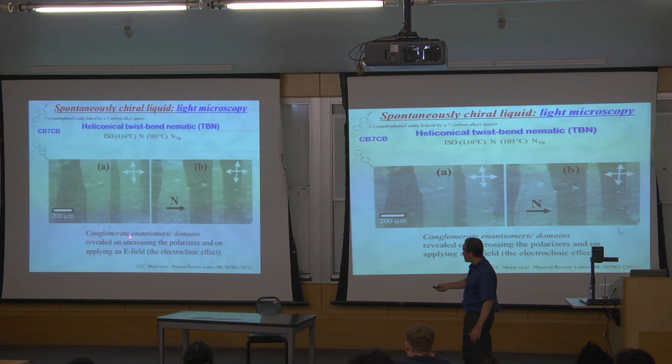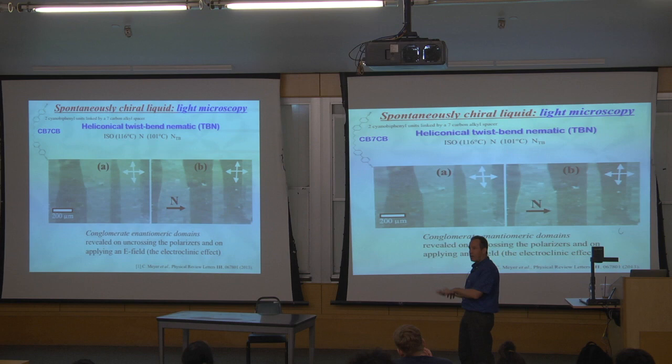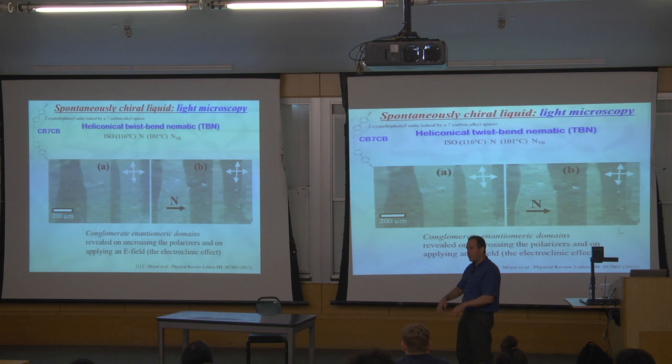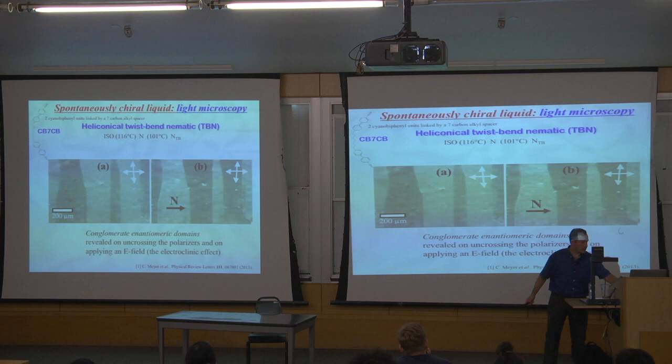The next hint is that when you put on an electric field perpendicular to the cell, the light domains switch to dark and the dark switch to light, meaning you can reorient the molecules with the electric field. Anticipating the answer: if you have something achiral and it becomes chiral, you'll have two chiralities coexisting — two macroscopic domains coexisting — and the electric field can switch between them.